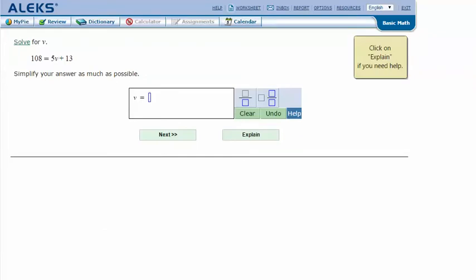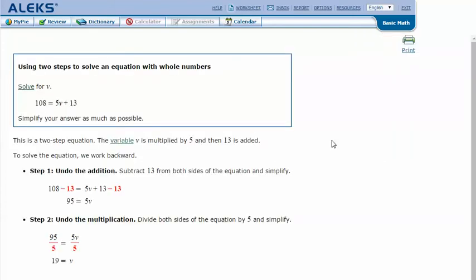Here's an example problem. Solve for v: 108 equals 5v plus 13. Simplify your answer as much as possible. Let's click Explain. This is a two-step equation. The variable v is multiplied by 5 and then 13 is added. To solve the equation, we work backward.